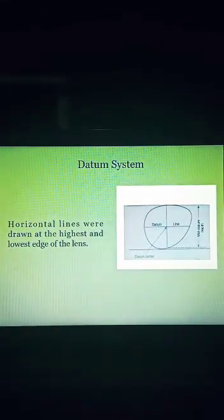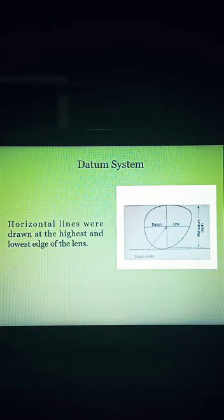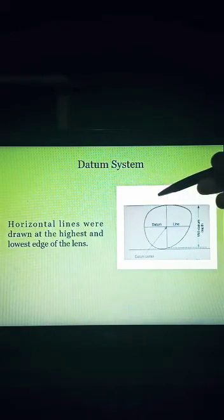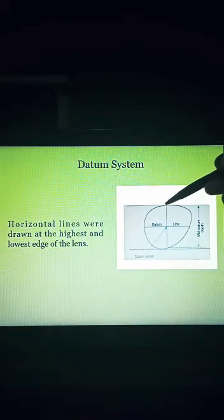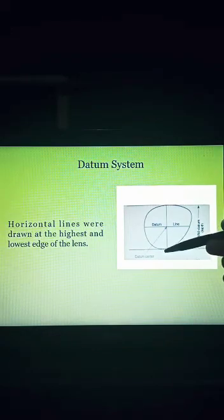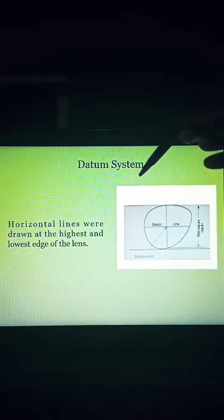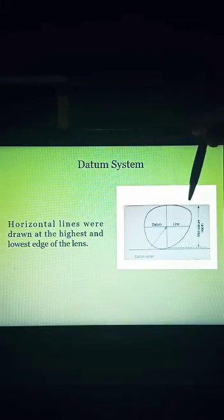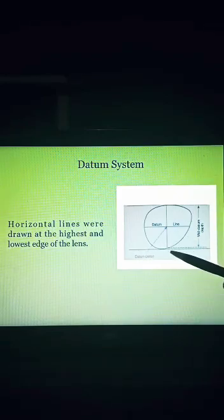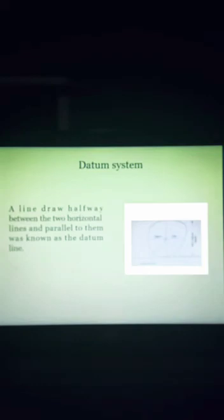Next, horizontal lines were drawn at the highest and lowest edge of the lens. See the diagram. This is the upper edge of the lens and this one is the lower edge. So we have drawn two horizontal lines, one is upper edge and another one is lower edge.